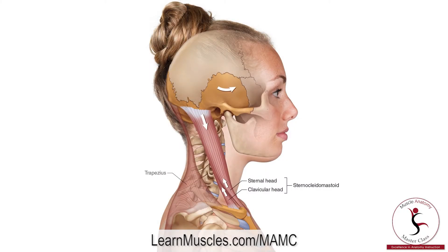We have a right lateral view of the head, neck, and upper trunk, and we are looking at the sternocleidomastoid muscle. For context, the trapezius muscle has been ghosted in with less density so that we can see through it.